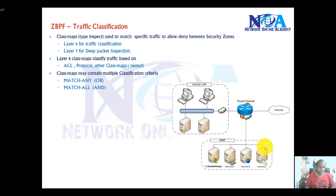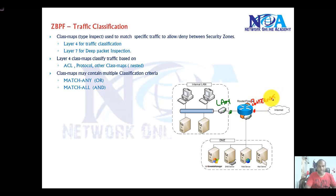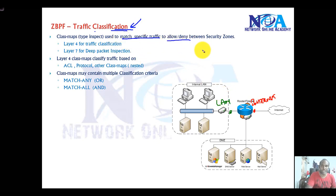Once we assign the interfaces to the security zones, as in the previous video, we configured this interface as a LAN security zone and this one as internet. Now we need to define what traffic we want to allow from LAN to internet — that is classification. Classification means we need to match specific traffic which needs to be allowed or denied between the security zones. By default, traffic is denied.